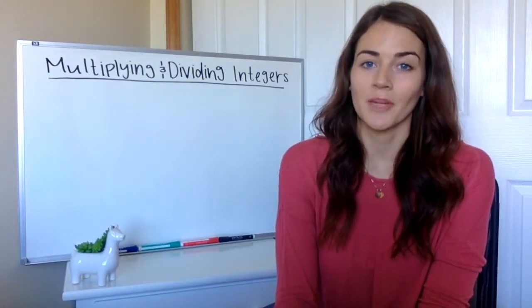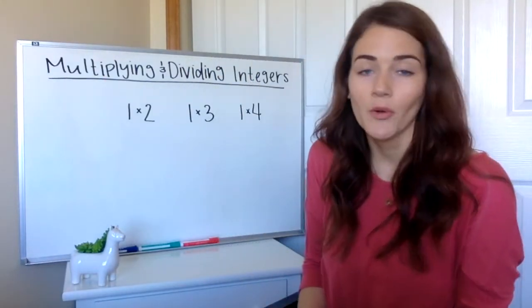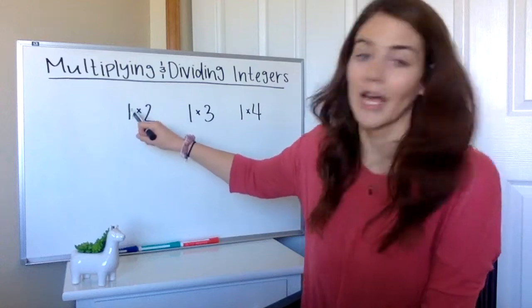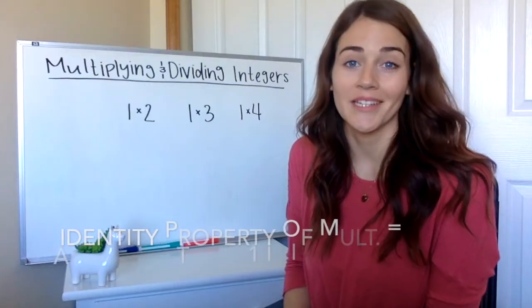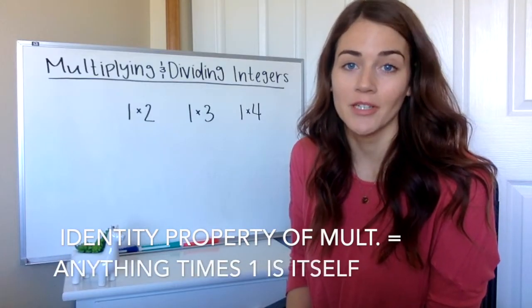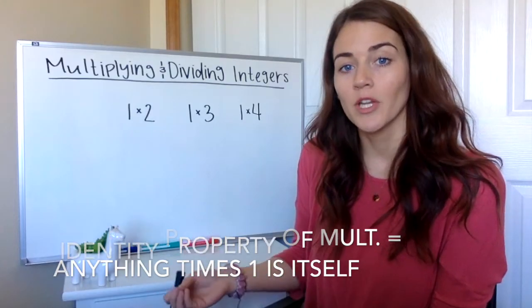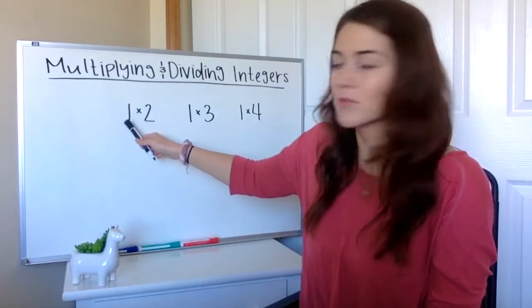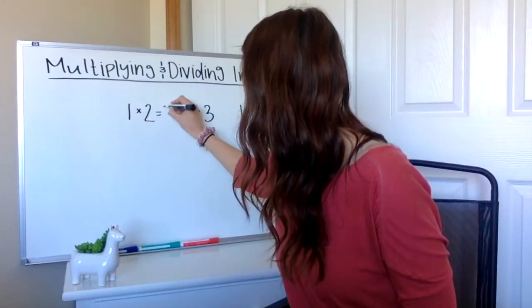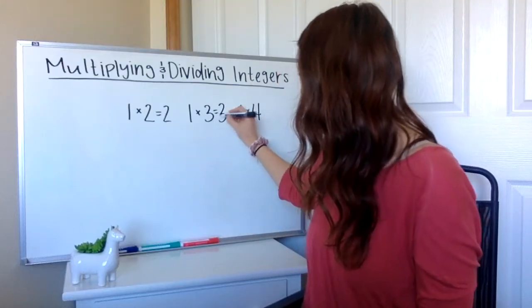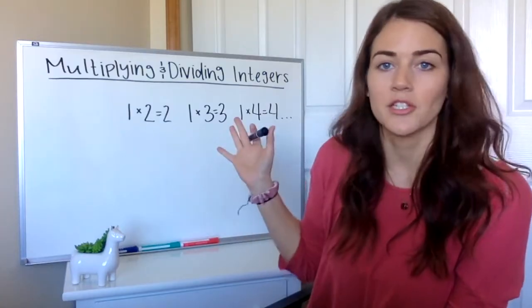I'm going to start with multiplication and something that should look pretty familiar to you. We should know our basic multiplication — we know anything times one is just itself. That is our identity property of multiplication, and those properties are really important because they tell us how numbers work. So two times one is two, three times one is three, four times one is four, and that just keeps going on forever.